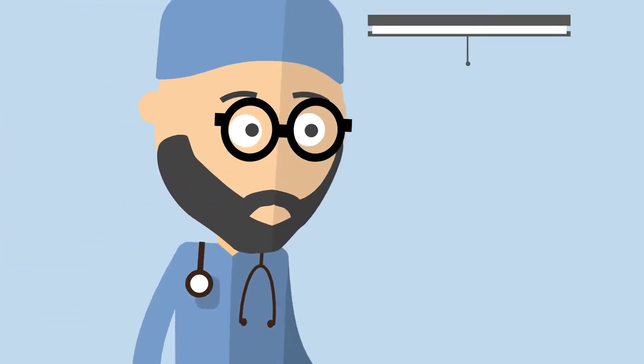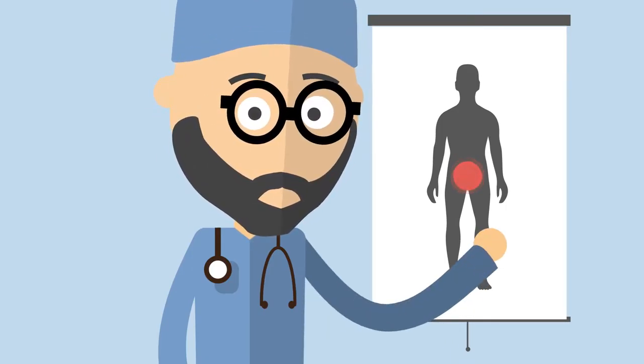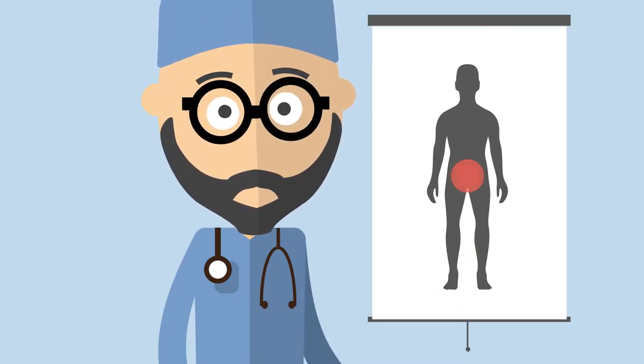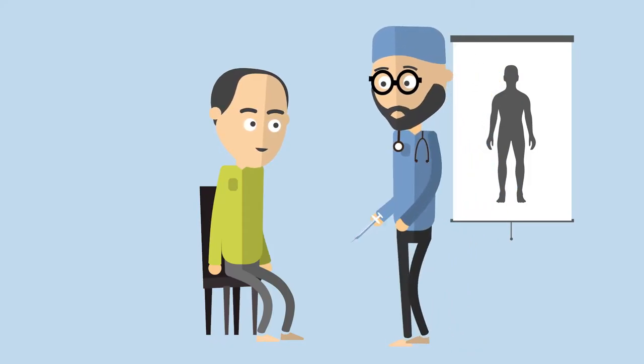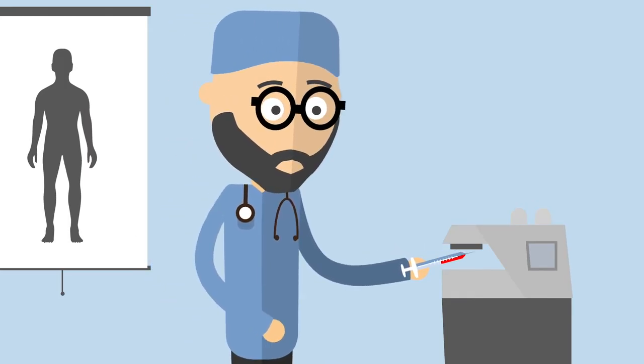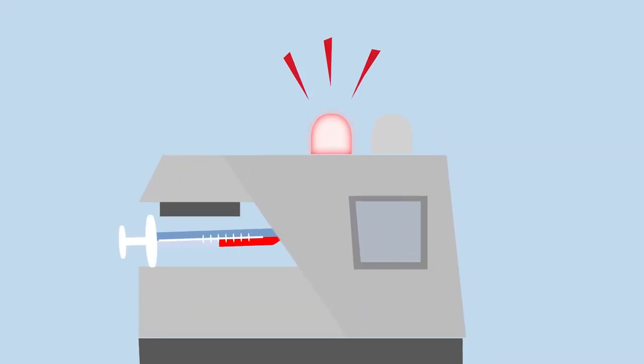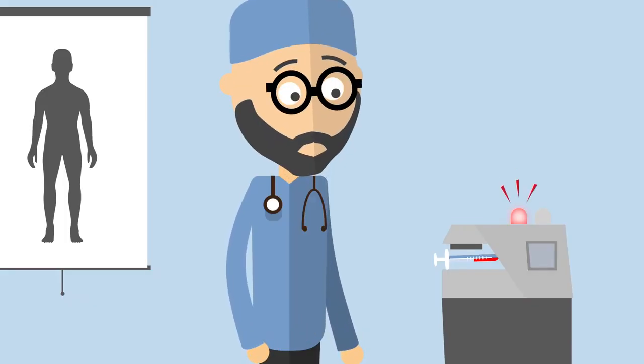Around 6,000 men are diagnosed with prostate cancer every year in Switzerland. One method used to detect prostate cancer at an early stage is PSA testing. PSA is a protein that is only produced by cells in the prostate gland and can be measured in the blood. A raised PSA level may indicate that there is a problem with the prostate gland.